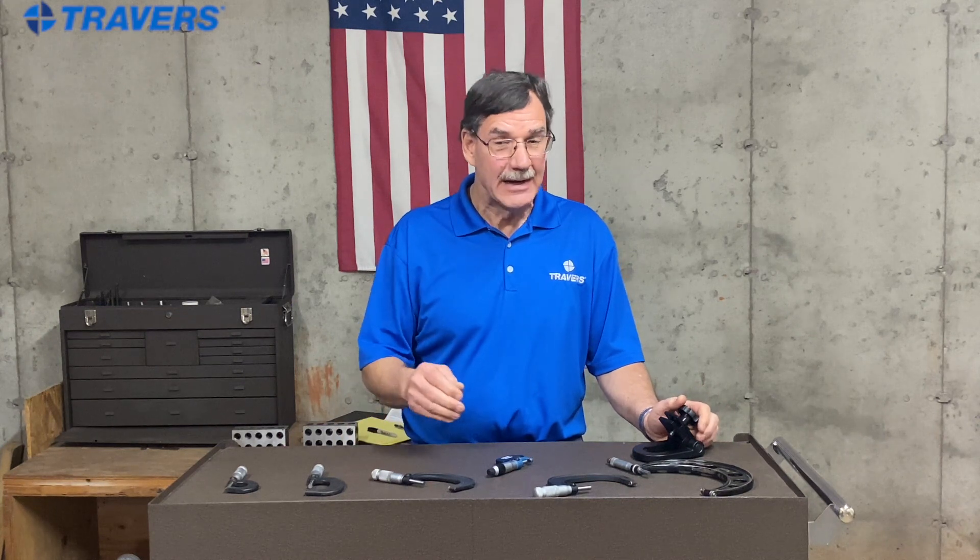So since we're reading three places past the decimal, that would actually, in machine shop language, that would be called a tenth. It wouldn't be called a tenth of an inch because it's not. It would be a tenth of a thousandth, but it would be called a tenth. So then point one, two, three, four would be one hundred and twenty-three thousandths and four tenths.